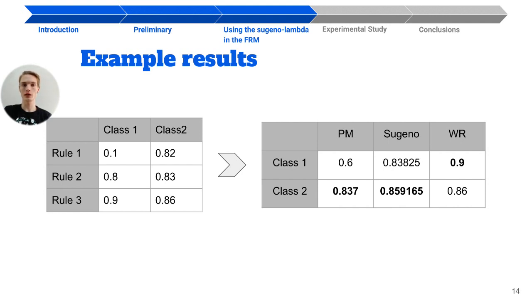for class 1, the Sugeno lambda measure computed a higher value than the power measure, which means that for Sugeno lambda measure the relationship of that class is stronger than for power measure, because Sugeno models the relationship between the data.